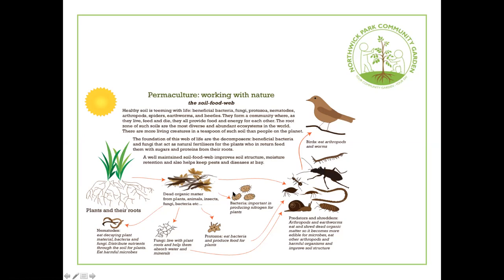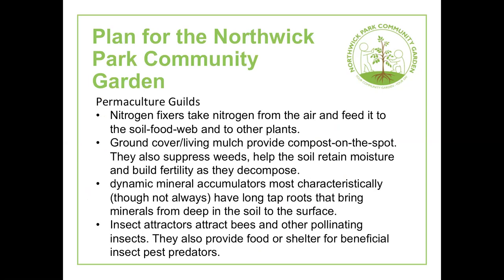The health of plants is dependent on the health of the soil food web. That's why there's a lot of emphasis on making sure the soil is covered and mulched — either with living mulch or with cardboard and wood chip — to protect the soil and encourage all the creatures that live above it. Plants are also organised according to permaculture guilds. Nitrogen fixers take nitrogen from the air via bacteria around their roots, feeding it into the soil food web network of fungi and bacteria, which then spreads nitrogen to feed other plants.